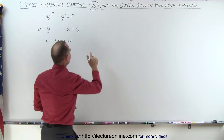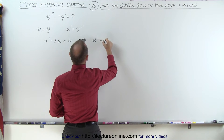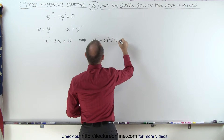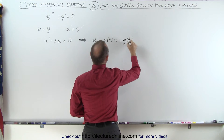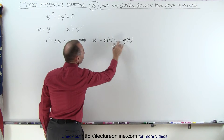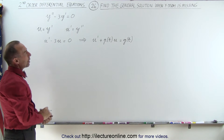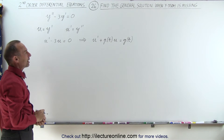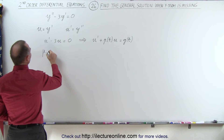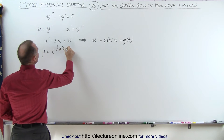The general format of that first order equation will look like this: u prime plus p as a function of t times u equals g as a function of t. Notice we can have non-constant coefficients and a function on the right side. To find the general solution, we find what we call the integrating factor. We'll call that mu, and the integrating factor is equal to e to the integral of p of t dt.